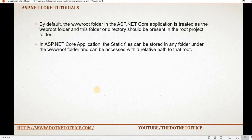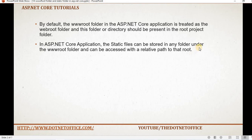By default, the wwwroot folder in the ASP.NET Core application is basically treated as a webroot folder, and this folder or directory should be present in the root project folder. When we create any static file in the application, all the static files should be stored under this folder called wwwroot. The static file can be stored in any folder under wwwroot and can be accessed with a relative path to the root.